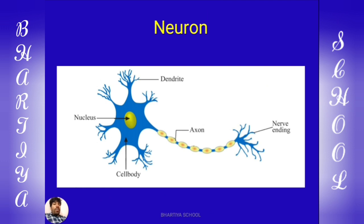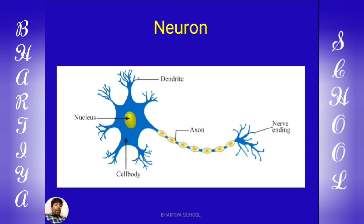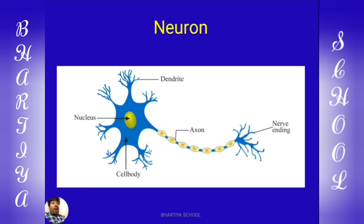Neuron's circular part is called cell body. The circular part of the neuron is called cell body. In this, nucleus and cell granules are present. The cytoplasm inside the cell body is called neuroplasm.